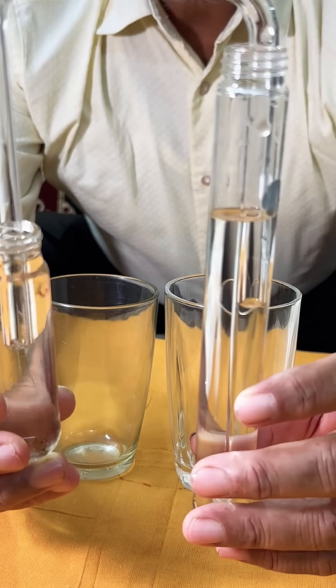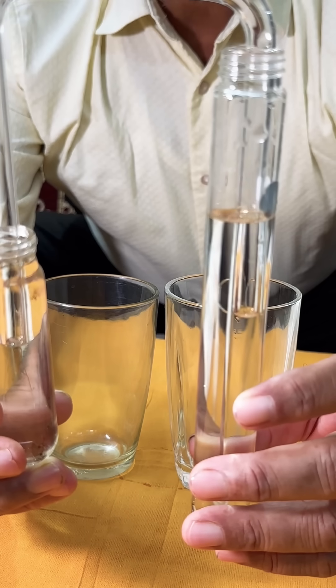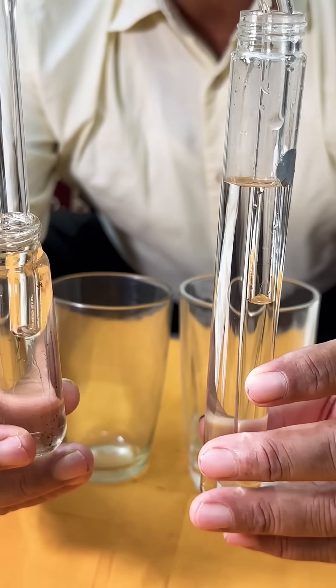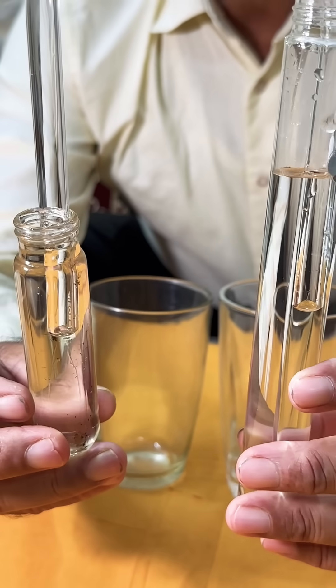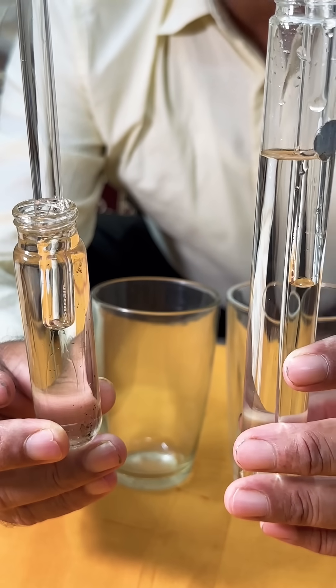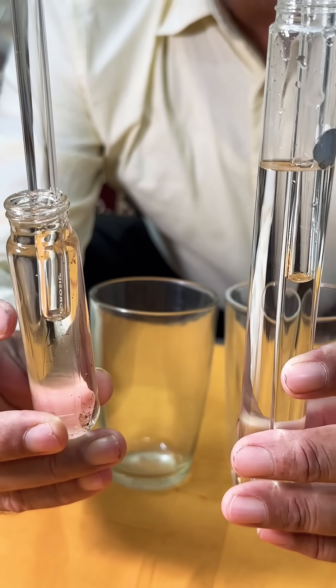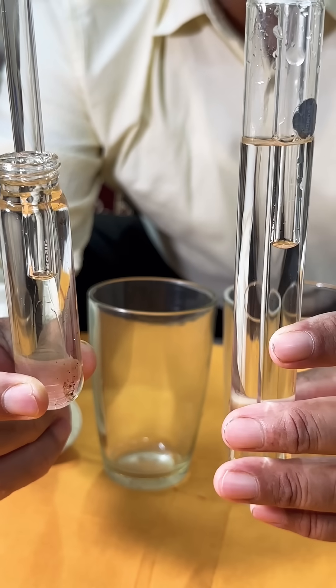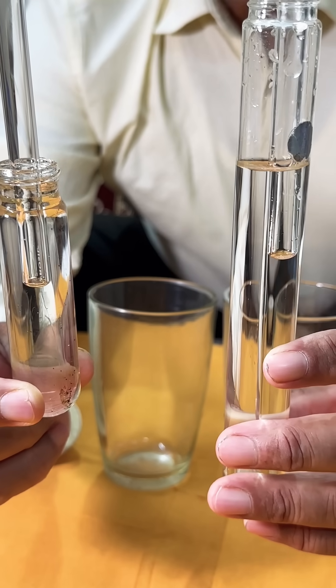So from this, we conclude that the optical character of glass and glycerin - they have the same character. So they merge, and we don't find anything up to this portion. We see only glycerin, even though the tube is inside there. Thank you.